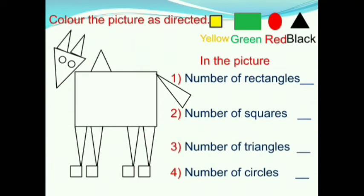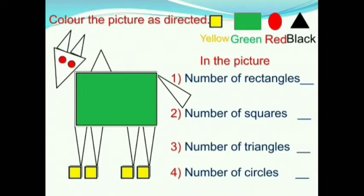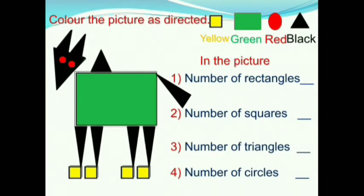Color the picture as directed. Children, this is an ox drawn using square, rectangle, circle and triangle. Now color the squares in yellow, rectangle in green, circle in red, and triangle in black. Now we should write the number of every shape. First, rectangles — there is only one rectangle, so we will write one.